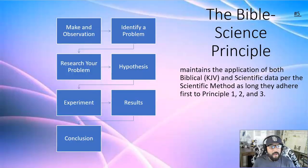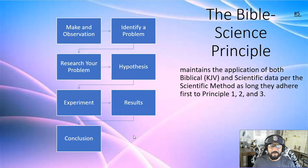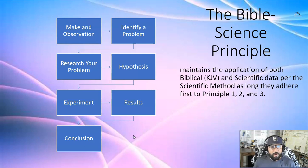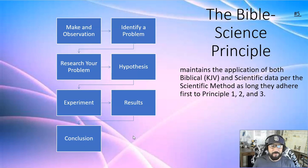The last most important principle is the Bible Science Principle, which is basically utilizing the scientific method and applying it to the Bible. As long as a scientific method adheres to the first three principles, then we're going to utilize the scientific method. It's really as simple as that.